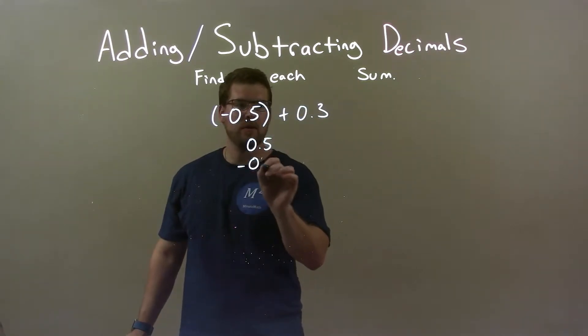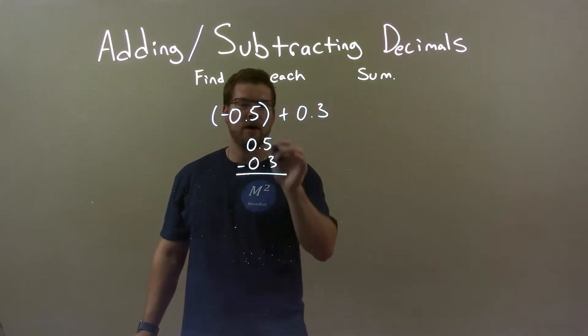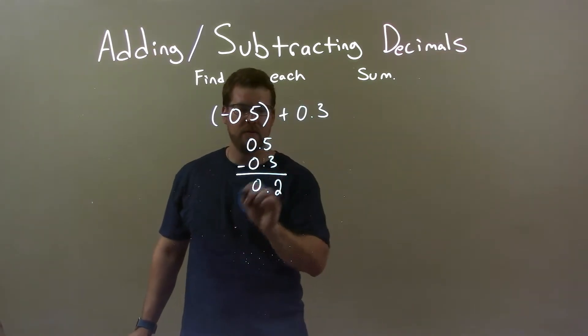0.5 minus 0.3. 5 minus 3 is 2. Keep the decimals lined up. 0 goes down.